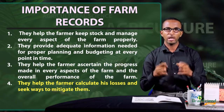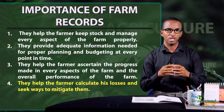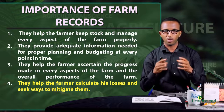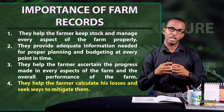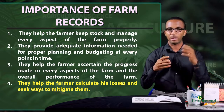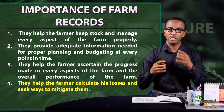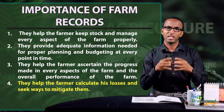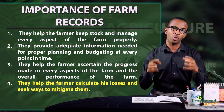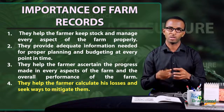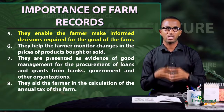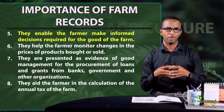Number four, farm records help the farmer to calculate his losses and seek ways to mitigate them. When a farmer engages in an activity — either to sell his produce or to buy produce — he evaluates the amount he has spent and, if there are shortfalls, looks for ways to minimize or reduce these shortcomings. Number five, they enable the farmer to make informed decisions required for the good of the farm.